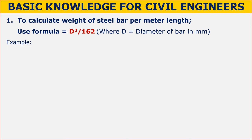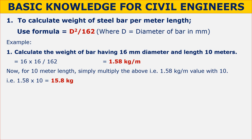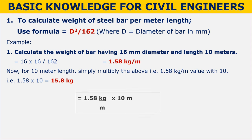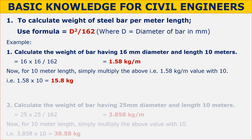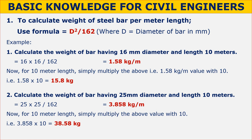For a bar of 16 mm diameter: 16 × 16 / 162 = 1.58 kg/m. For a 10 m length, 1.58 × 10 = 15.8 kg. Similarly, for a 25 mm diameter bar: 25 × 25 / 162 = 3.858 kg/m. For a 10 m length, 3.858 × 10 = 38.58 kg.